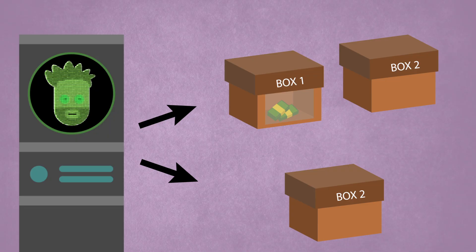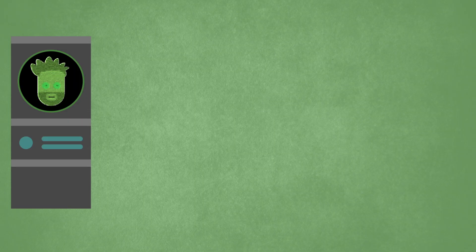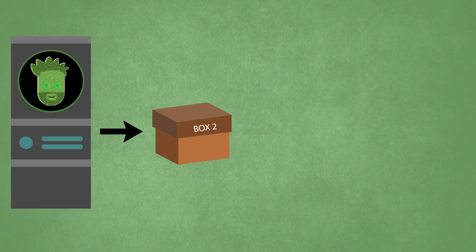The supercomputer has carried out this test hundreds of times and has never made a wrong prediction. So the sequence of events are as follows: the supercomputer makes its prediction, and based on this prediction it either puts the £1,000 into box two or leaves it empty. You then make your choice. What do you choose?